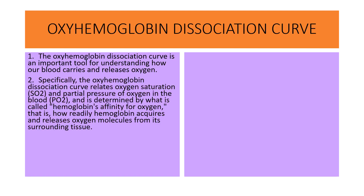Specifically, the oxyhemoglobin dissociation curve relates oxygen saturation (SO2) and partial pressure of oxygen in the blood (PO2), and is determined by what is called hemoglobin's affinity for oxygen — how readily hemoglobin acquires and releases oxygen molecules from its surrounding tissue.